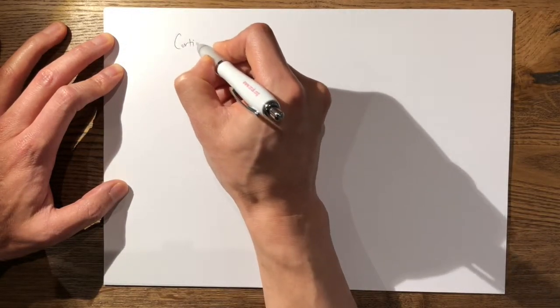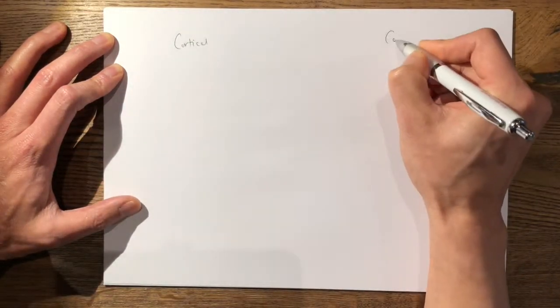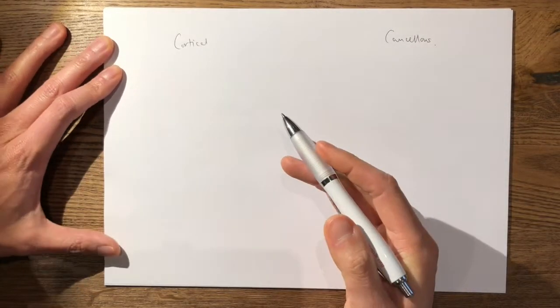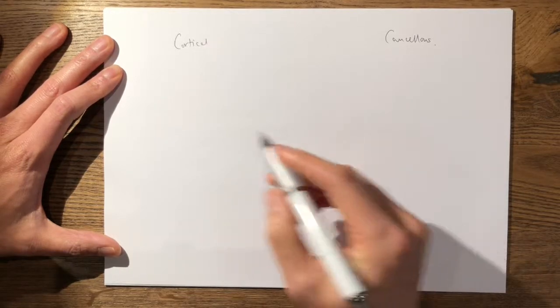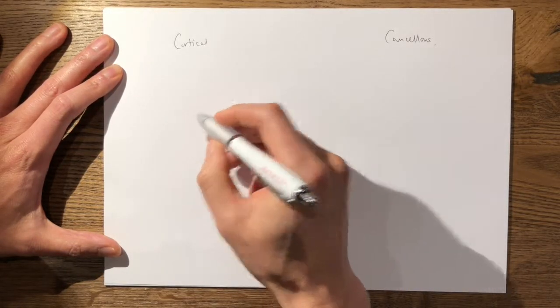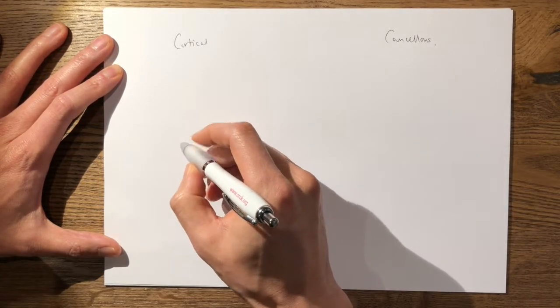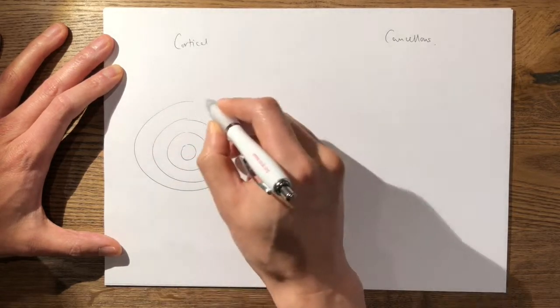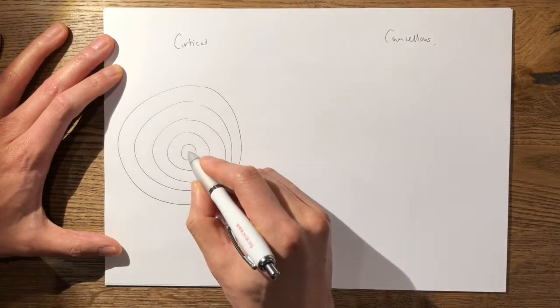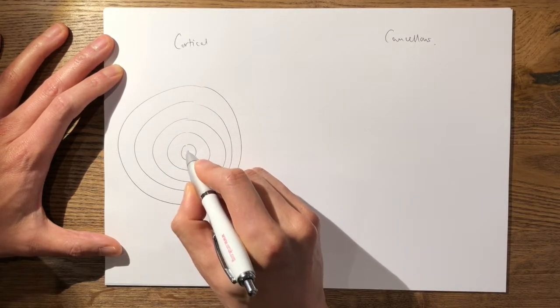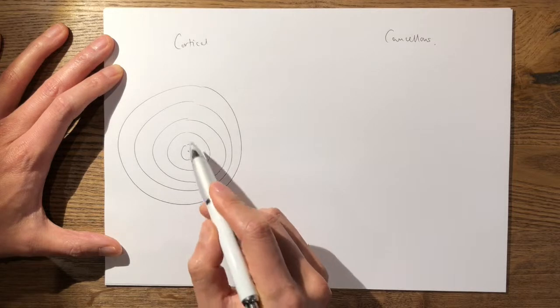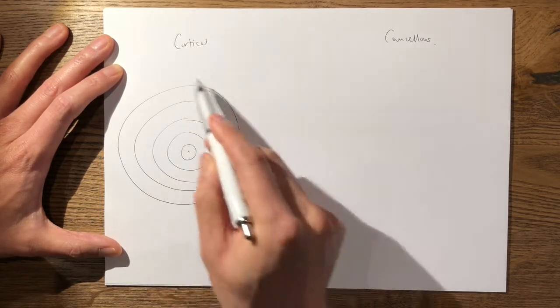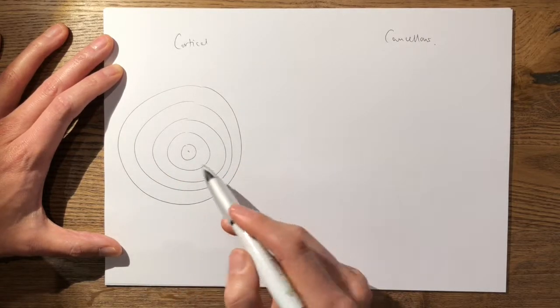Cortical bone is much more compact and is usually arranged in osteons. An osteon consists of a central Haversian system which contains the neurovascular bundle, and you have six or seven concentric lamellar rings which form around this central Haversian system.